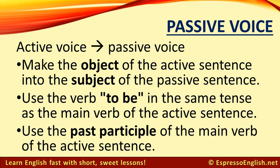To change the active voice into the passive voice, make the object of the active sentence into the subject of the passive sentence. Use the verb 'to be' in the same tense as the main verb of the active sentence, and use the past participle of the main verb of the active sentence.